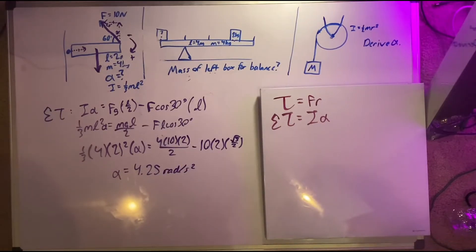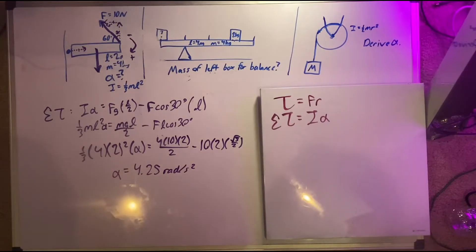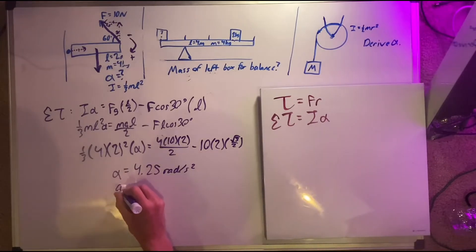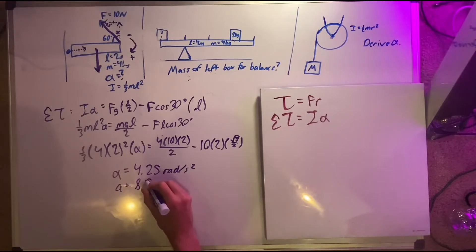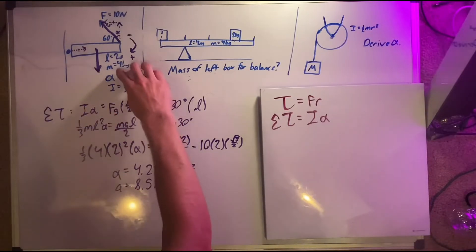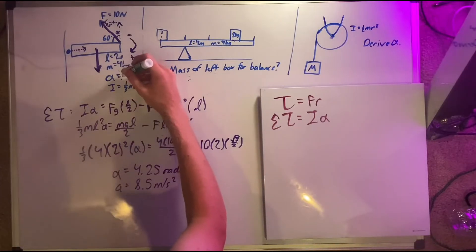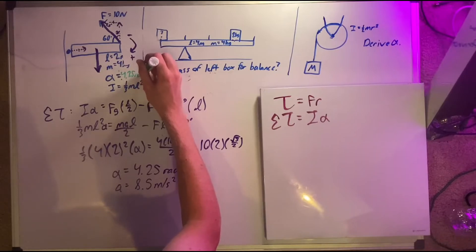Quick note: we can convert angular acceleration to linear acceleration by multiplying by the length of the entire object, which is 2. So the actual linear acceleration at the tip would be 8.5 meters per second squared. So alpha equals 4.25 radians per second squared. That's our solution for this problem.